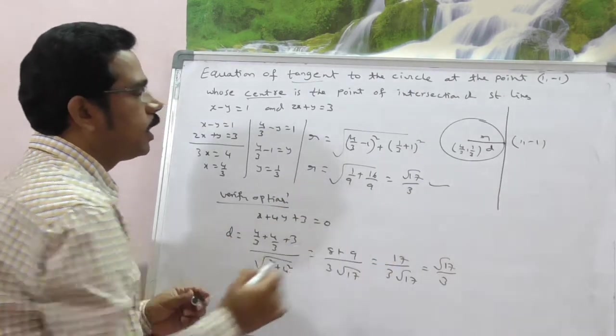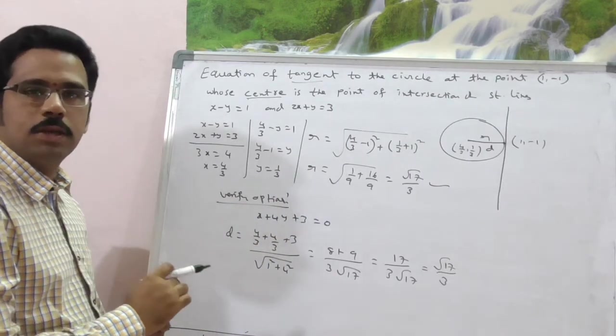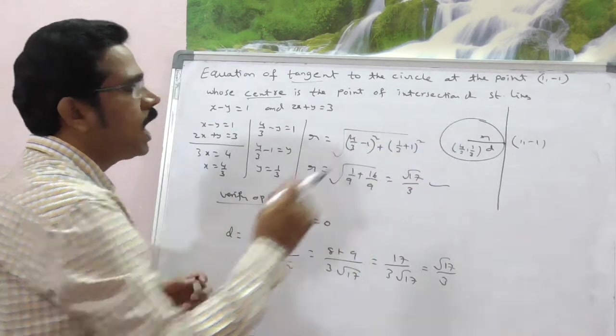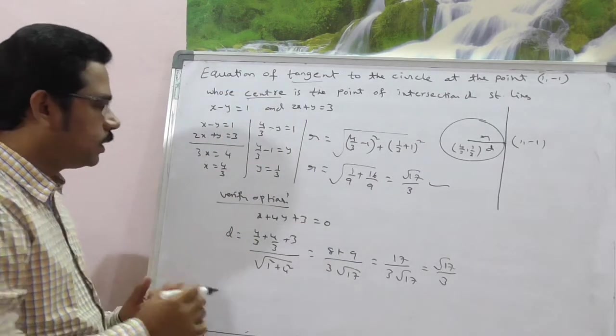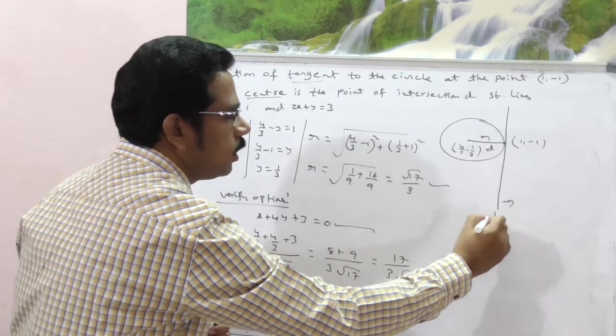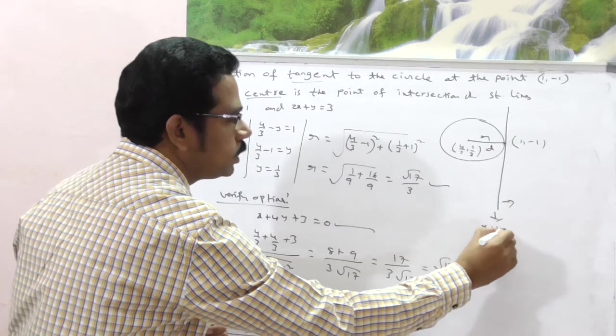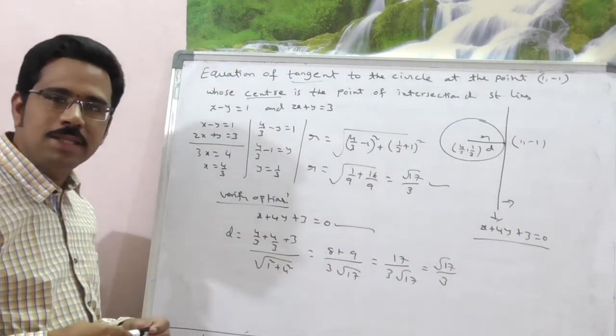So, already here we got radius as root 17 by 3. Here, these two are equal. If radius is equal to perpendicular distance from center to the line, that line should be tangent. Therefore, he is asking only equation of tangent. Therefore, what is the equation of tangent? That is nothing but this equation or this line should be x plus 4y plus 3 is equal to 0.